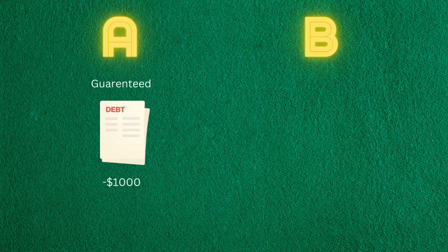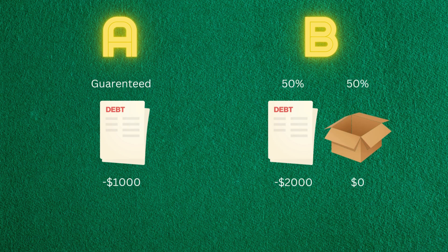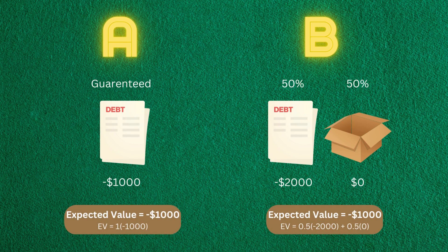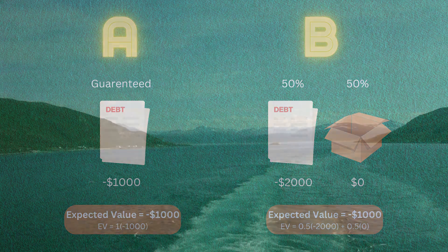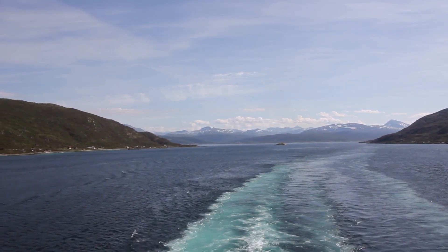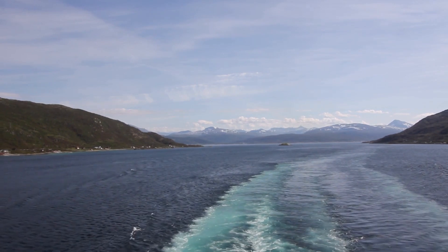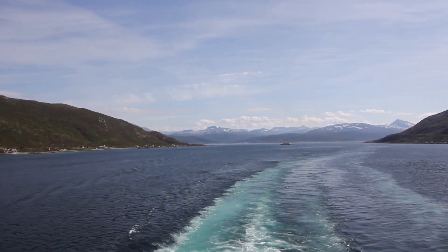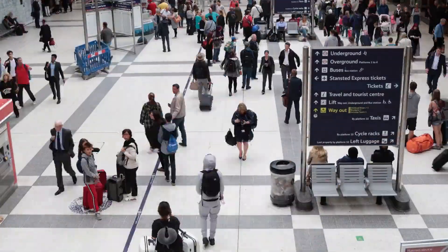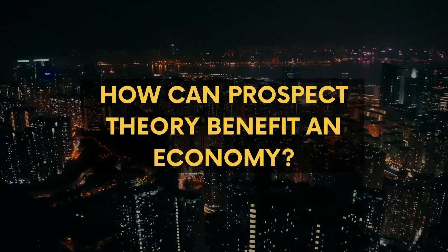But now let's change the scenario slightly. Option A, a guaranteed loss of one thousand dollars, and Option B, a 50% chance of losing two thousand dollars and a 50% chance of losing nothing. Now most people will choose Option B, as there's a chance of avoiding the loss, even though the expected outcome is the same as in the first scenario. We'd expect a truly rational person to choose the same option in both scenarios, regardless of whether it's about losses or gains. This illustrates the key idea of prospect theory: people's choices are not just driven by the potential outcomes, but by how the potential outcomes are framed in terms of gains and losses, and how we're more risk-averse when it comes to losses than we are with gains.